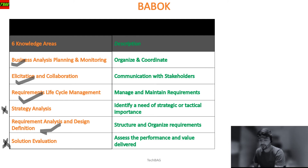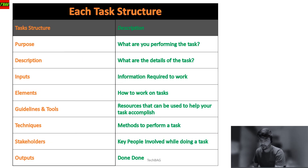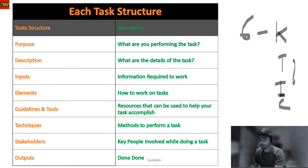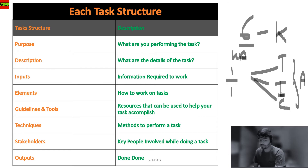I've already explained the overview of chapters in my previous video — if you missed it, please go and watch it for a better understanding of each chapter. Moving forward, all six knowledge areas will be covered, along with the key chapters such as techniques, introduction, and competencies. Starting with chapter one, we'll cover the chapter one techniques, chapter one introduction, and then the competencies and key skills required for that chapter.